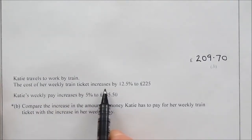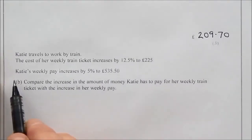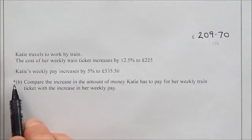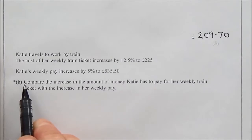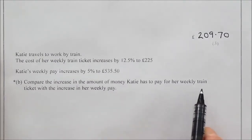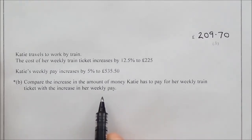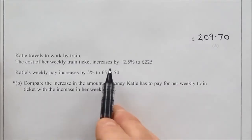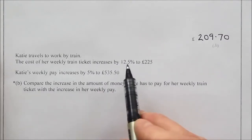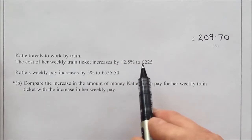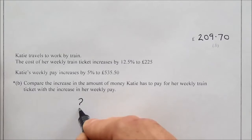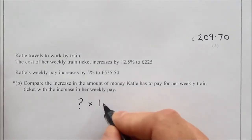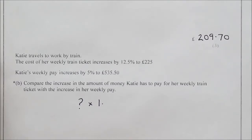Part B, starred question: compare the increase in Katie's weekly train ticket cost with the increase in her weekly pay. The train ticket increased by 12.5% to £225, and her pay increased by 5% to £535.50. This requires reverse percentages - working back to find the original values before each increase. Using a multiplier of 1.125 for the train ticket...